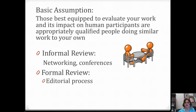Formal peer review is necessary for many scholarly journals, and this is the editorial process. A journal article won't get published unless a team of reviewers approves it, often requiring numerous revisions to ensure that what is published is the best research possible.